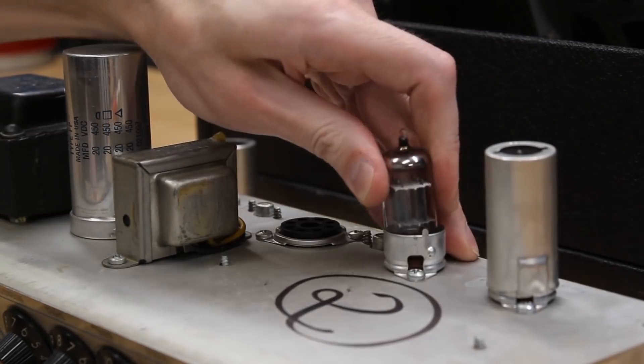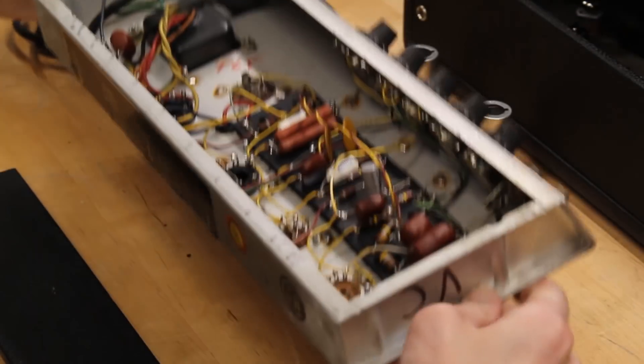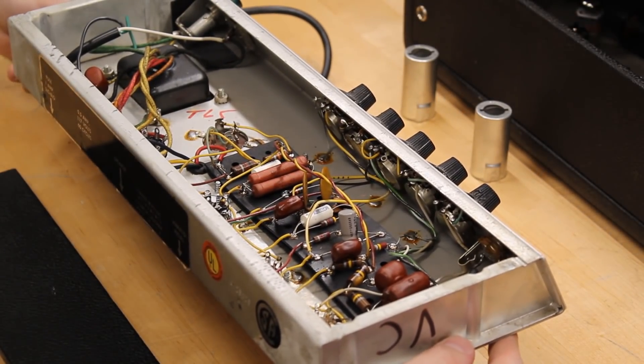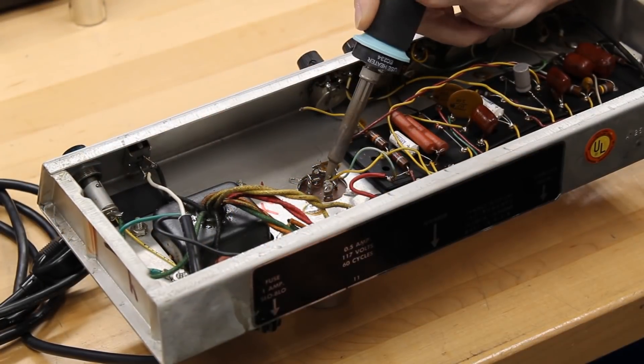We put together a nice set of NOS tubes from our inventory here at Amplified Parts. Now we are going to flip the chassis over and remove the cap. We are taking note of which wires are connected to which lugs before removing.